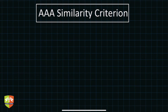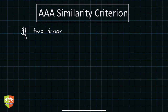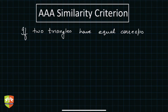Hello and welcome to another session on similar triangles. In the previous session we showed how a similarity criteria works. So what was a similarity criteria? Let's first write down the statement and then we'll try to establish it through a general proof. The statement suggests that if two triangles have equal corresponding angles, then the two triangles are similar.